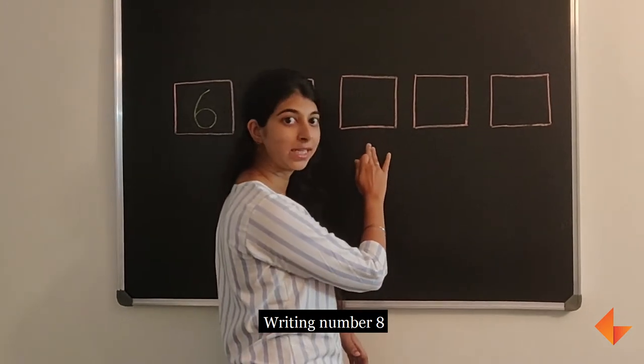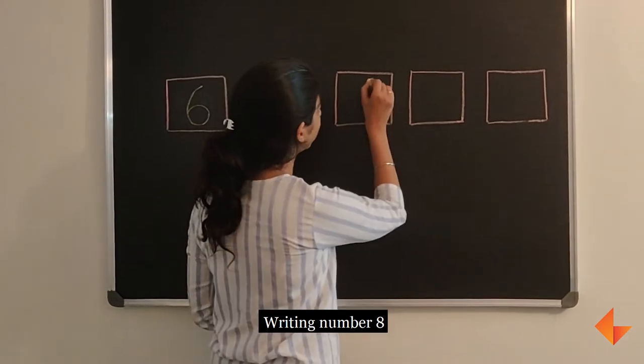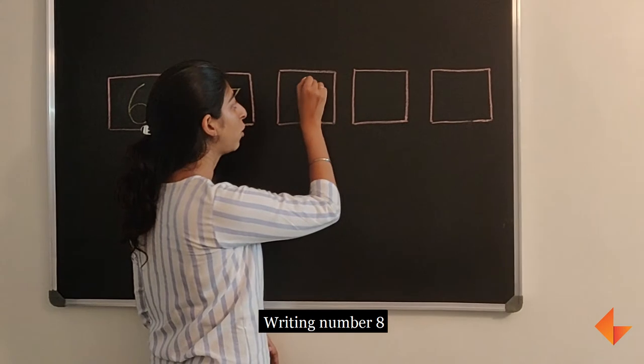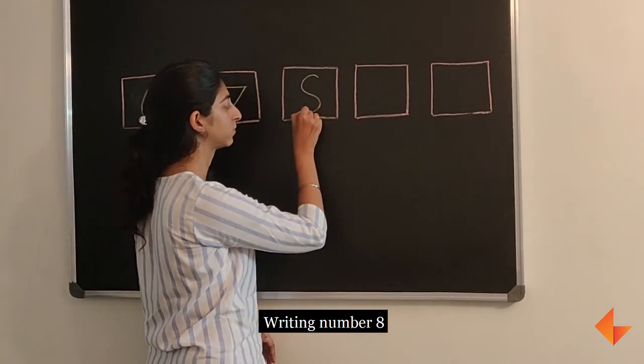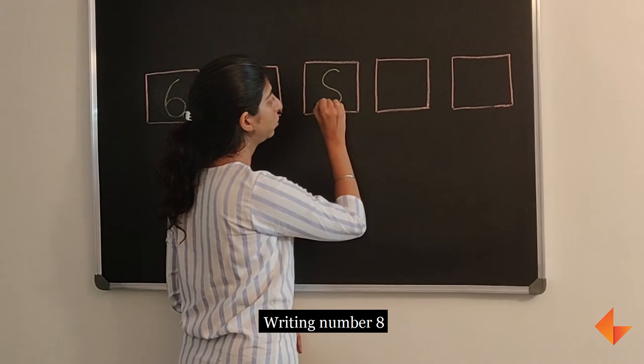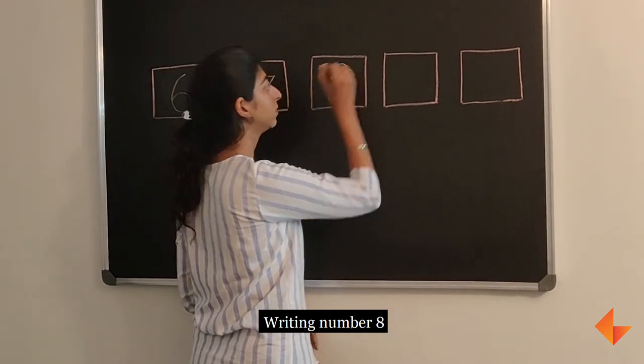To write number 8, start at the top and draw an S. Continue it to meet the top.